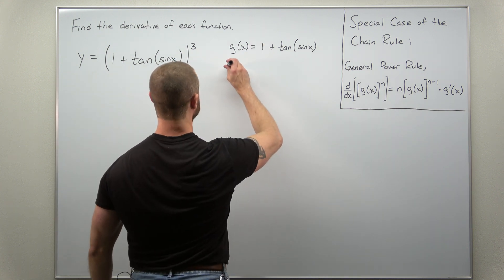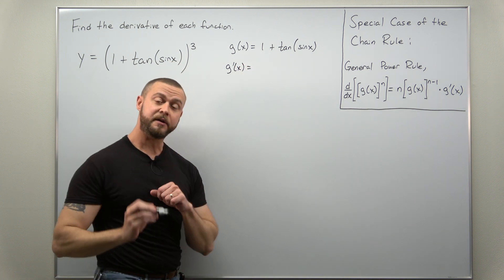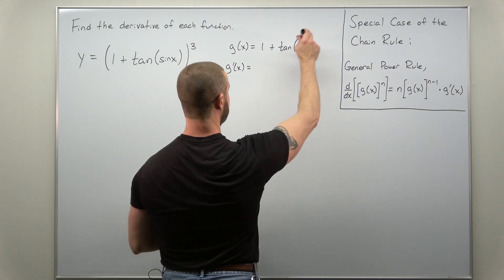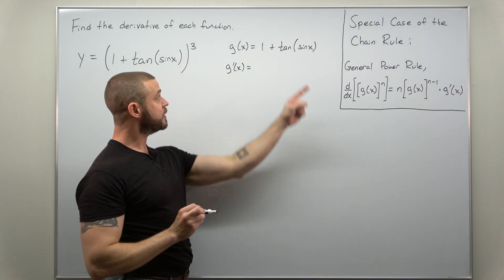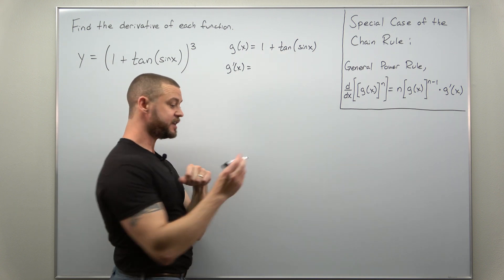We're going to calculate g prime and if we differentiate term by term, the derivative of the constant 1 is 0, and if we apply the chain rule here, the derivative of the outer function, the derivative of tangent is secant squared.